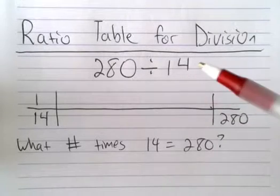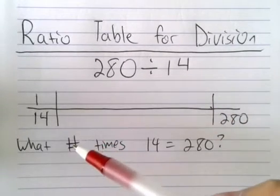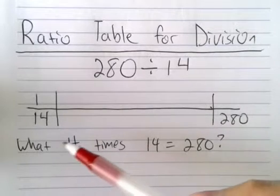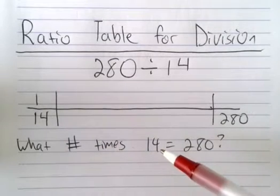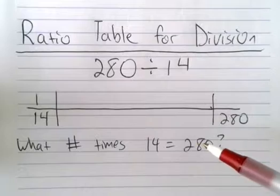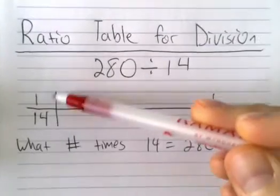Remember you can think of that as like a reverse multiplication problem, so you could say to yourself, hmm, what number times 14 is going to equal 280? And so we can set up a ratio table just like we would for multiplication.